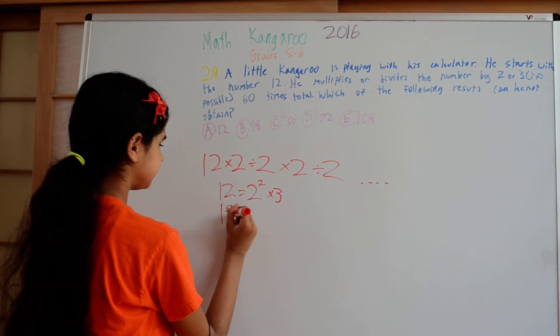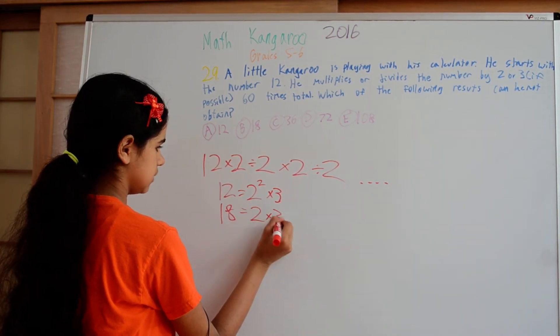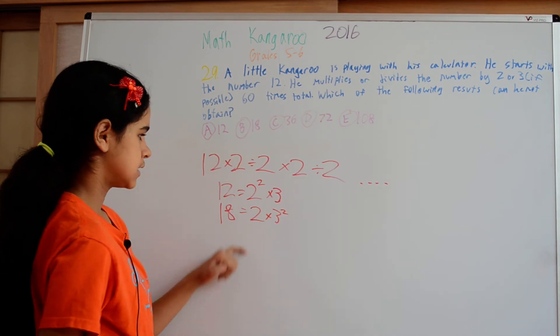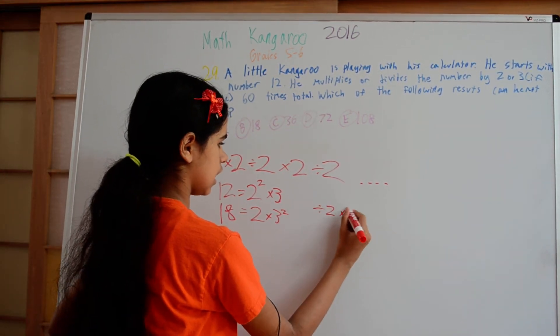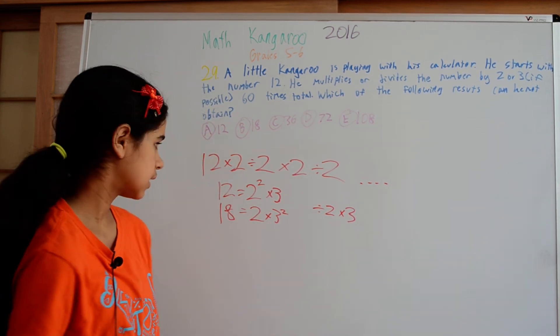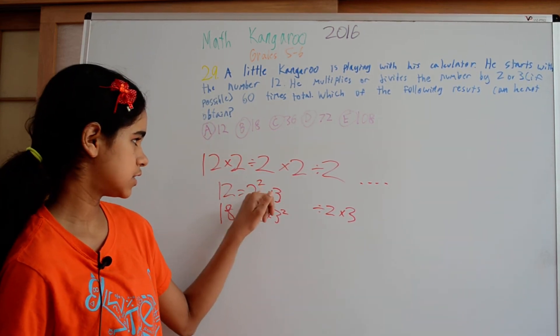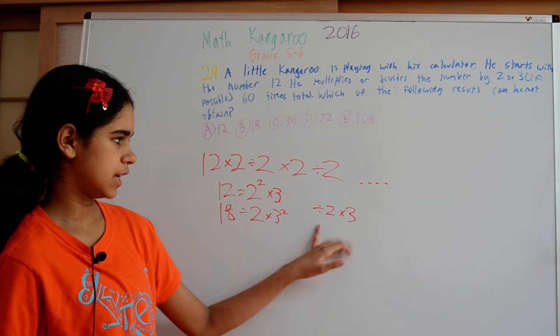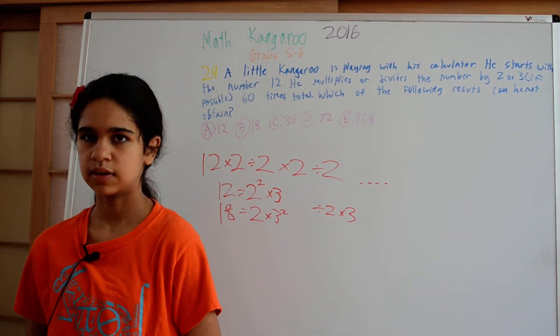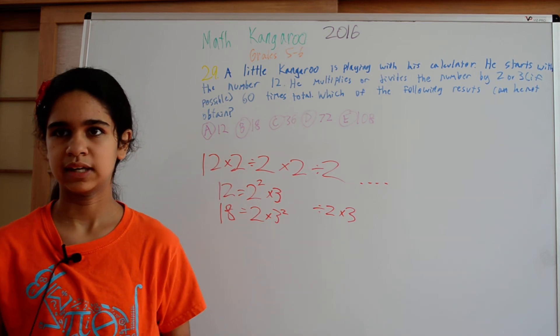So 18 is 2 times 3 squared. So to get from 12 to 18, we'll have to divide by 2 and multiply by 3 because that will give us from 2 2's here to 1 2 and 1 3 to 2 3's. And that's 2 moves, that's an even number, and so we can get 18.